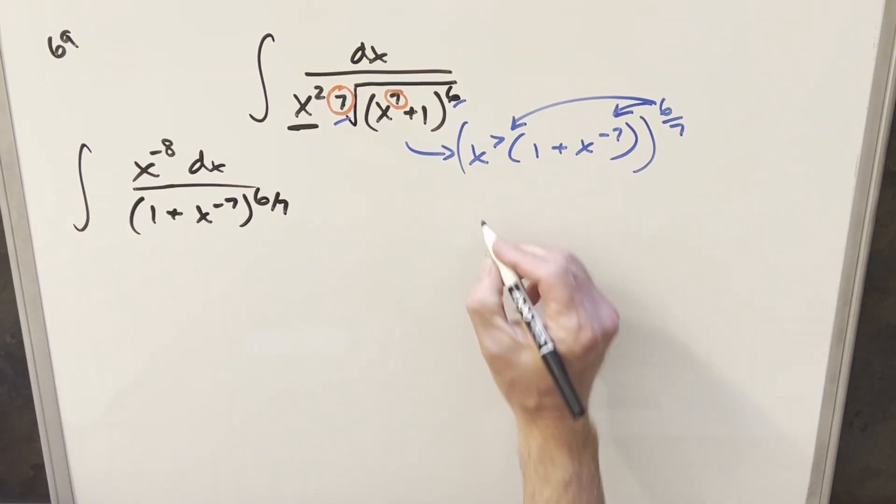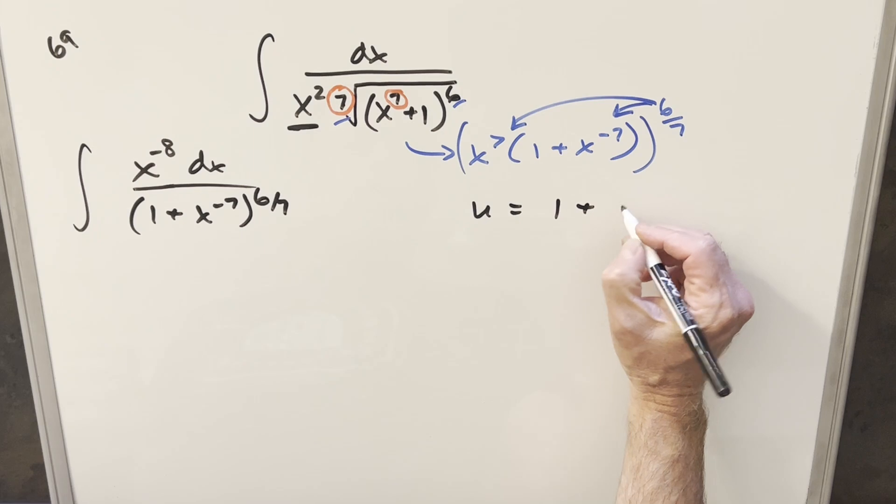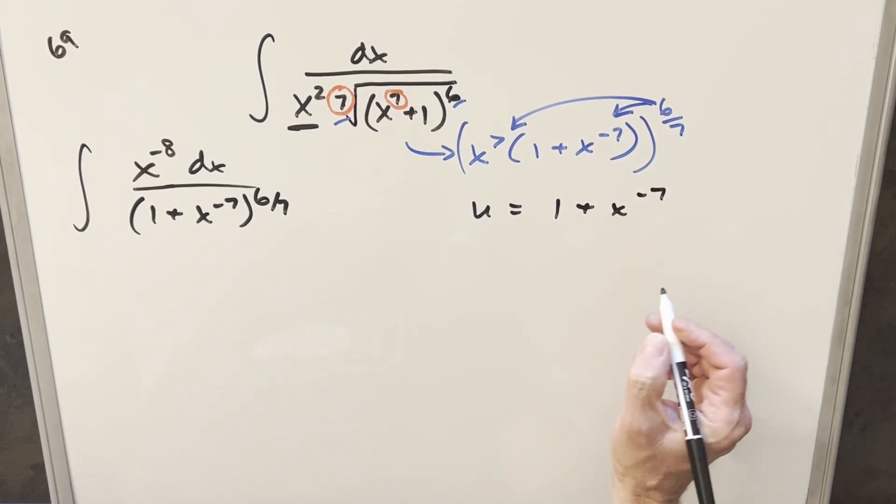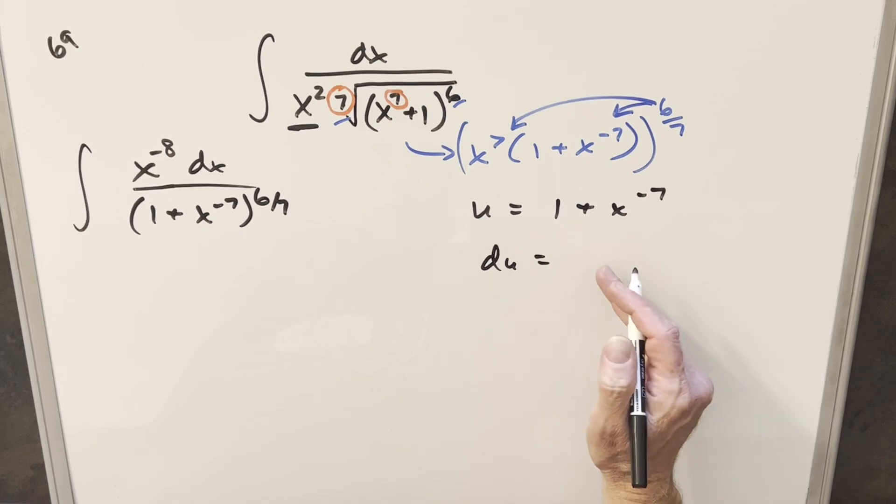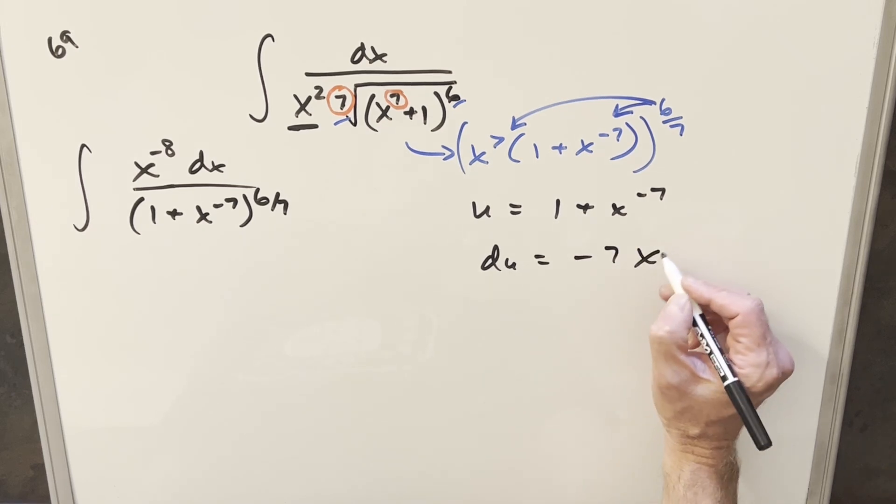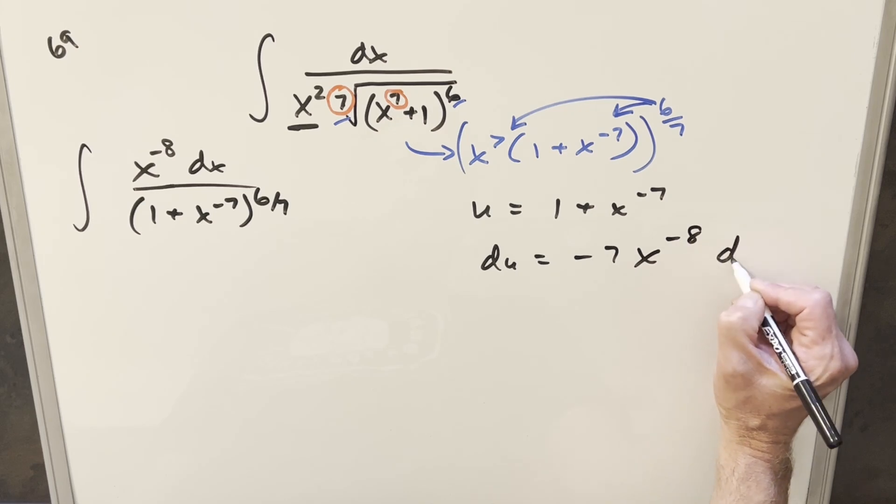So setting up this u substitution, first we'll just go ahead and have 1 plus x minus 7 for our u. Take a derivative here, get a du value. A derivative of that 1 is just going to be 0. A derivative here with power rule, we get minus 7 and x to the minus 8 dx.